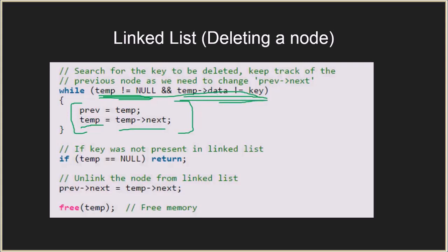When either condition breaks us out of the loop, we check if the key was not found — meaning we reached the end of the list without a match — and simply return. Otherwise, we unlink the node by updating the next pointer of previous to the next of temp, where temp is the node to be deleted. Finally, we free the memory held by temp, completing the deletion of the node with the given key.